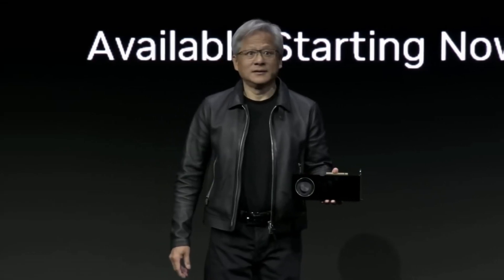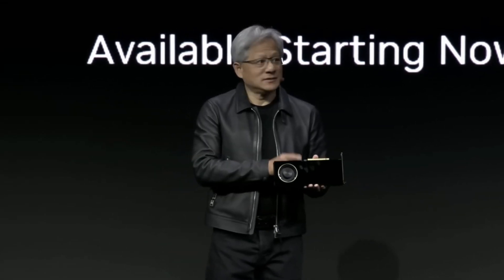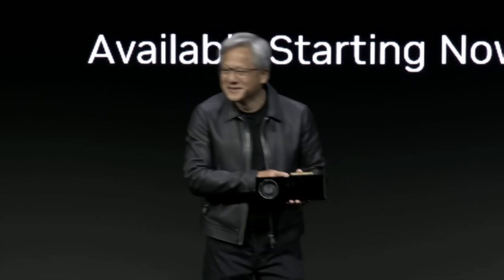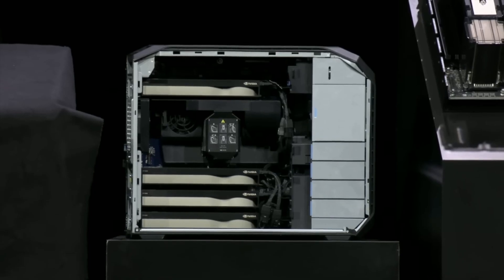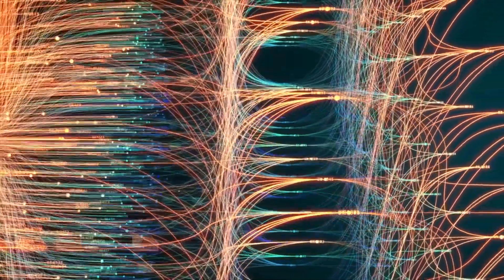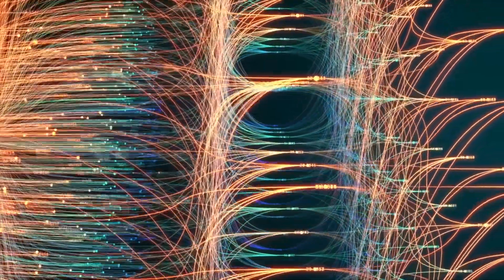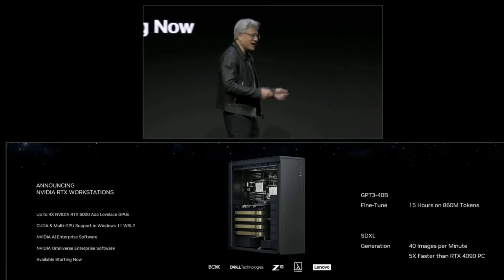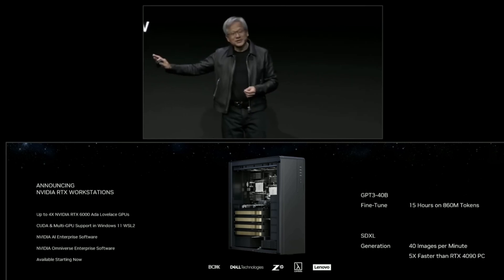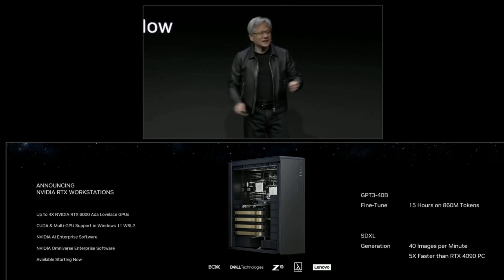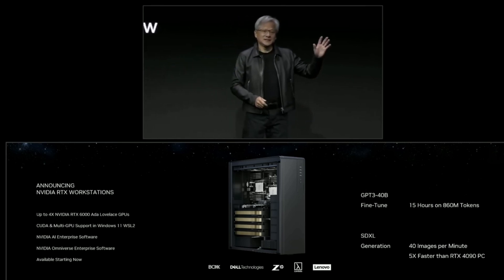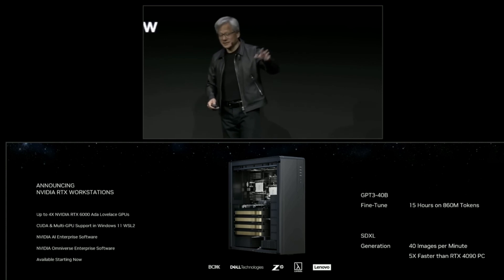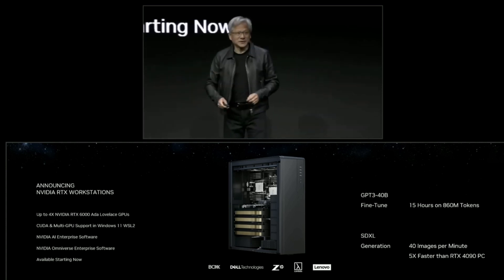NVIDIA also announced the most powerful workstation GPU: the RTX 6000. If you pack four of these GPUs into a workstation, it will fine-tune and inference large language models for generative AI incredibly fast, producing answers in seconds, not minutes. You can fine-tune a GPT-3 model with 40 billion parameters and about 1 billion tokens in 15 hours — five times faster than an RTX 4090 PC.